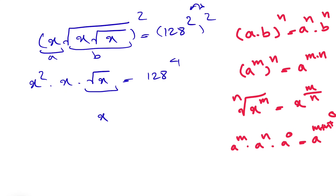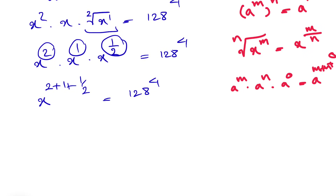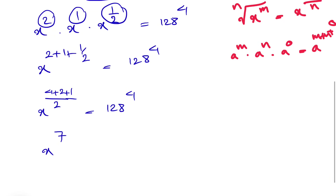Here we have x to the power of 1, and we know we have the second root of x, so that's 1 over 2. So we have x to the power of 1, x to the 1, and x to the 1/2 — these are our m, n, and o — and we have 128 to the power of 4. On the left side the exponent is 2 plus 1 plus 1/2, which with a common denominator is 4 plus 2 plus 1 over 2, giving us x to the power of 7 over 2 is equal to 128 to the power of 4.